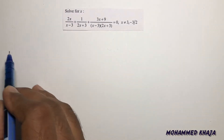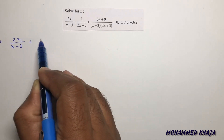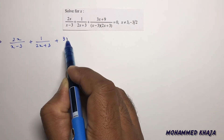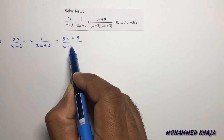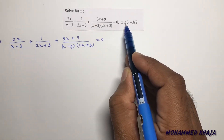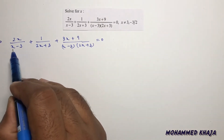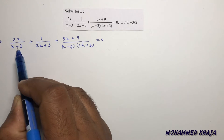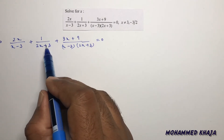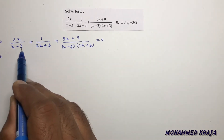Solve for x: 2x/(x-3) + 1/(2x+3) + (3x+9)/[(x-3)(2x+3)] = 0, where x is not equal to 3 and x is not equal to -3/2. Because if x equals 3, the denominator (x-3) becomes 0 and 2x/(x-3) is undefined. Similarly, if x equals -3/2, then (2x+3) becomes 0 and that term is also undefined.